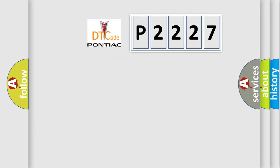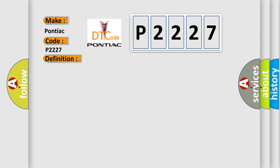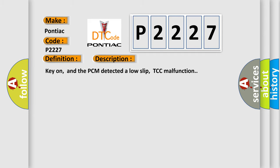So, what does the diagnostic trouble code P2227 interpret specifically for Pontiac car manufacturers? The basic definition is PCM Torque Converter Clutch (TCC) solenoid. Here is a short description of this DTC code: Key on, and the PCM detected a low slip TCC malfunction.